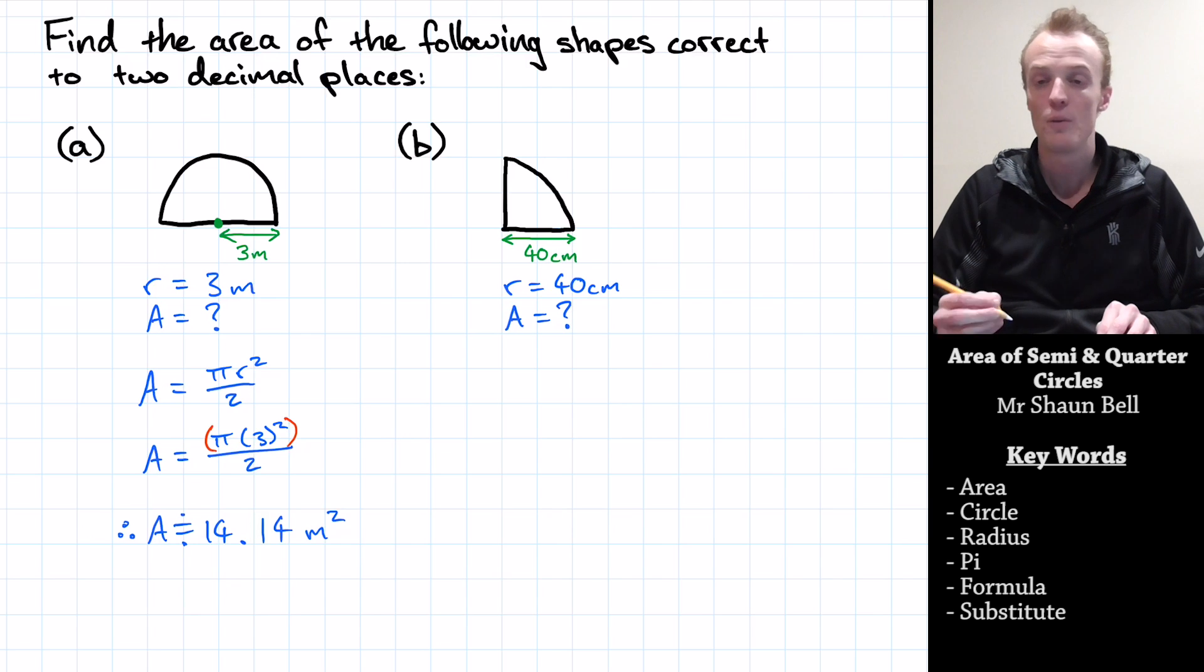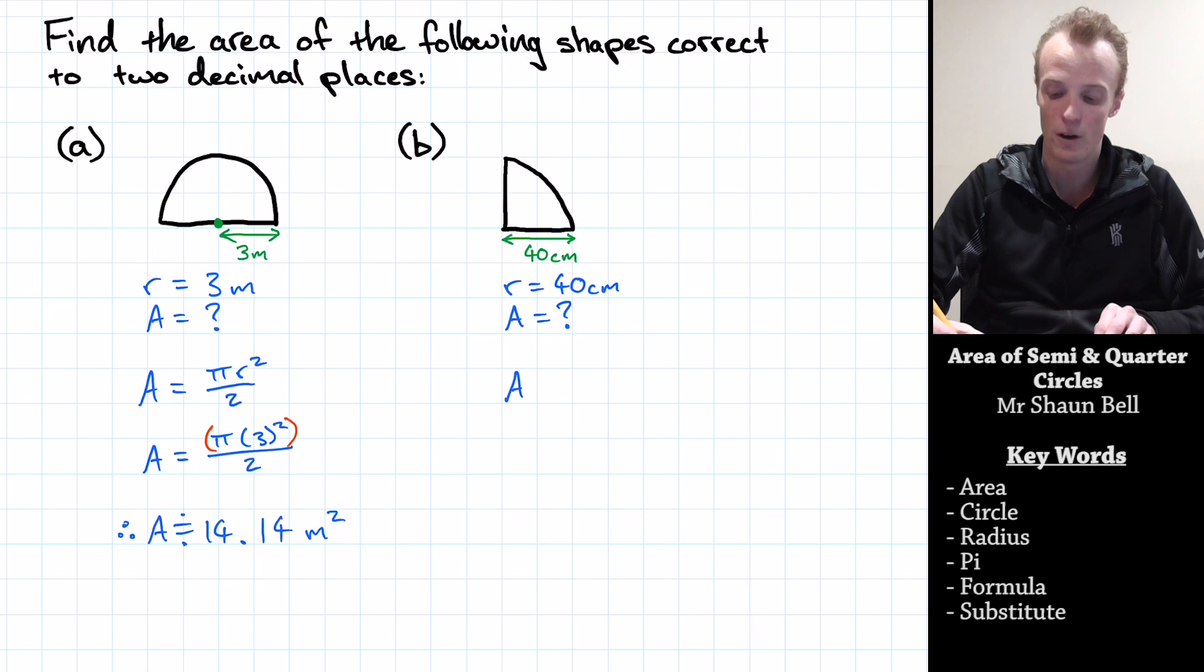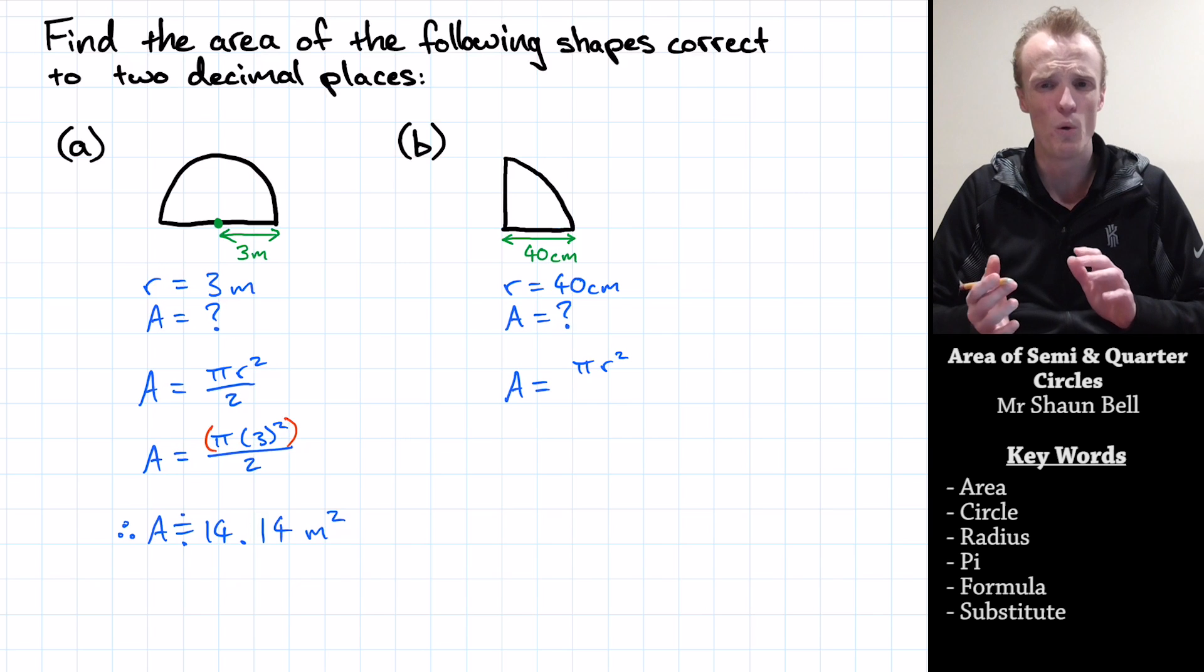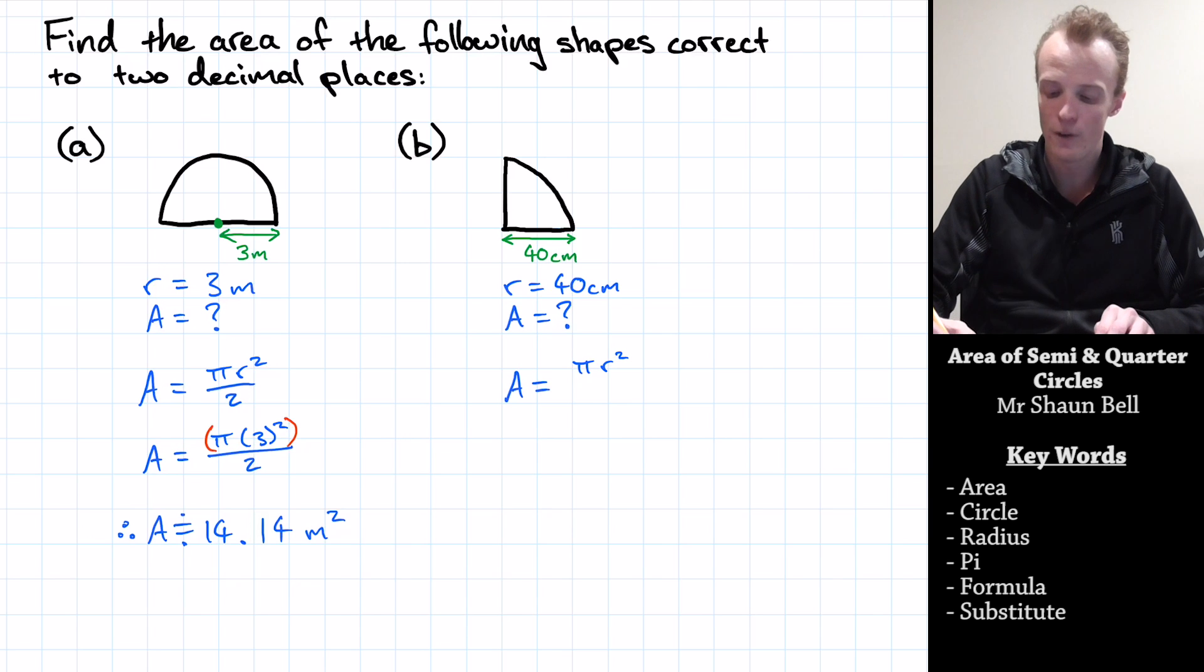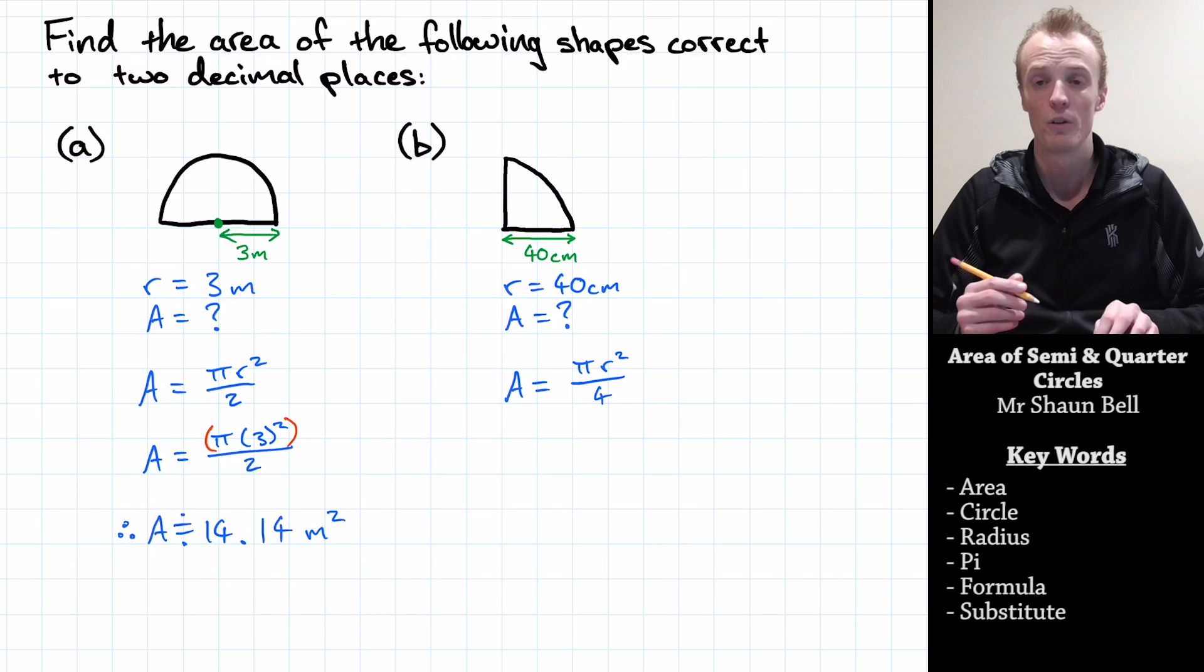Once again, I'm looking to find the area of this quarter of a circle. So I don't know what the area is right now, but what I do know is the formula for a whole circle. And the formula for a whole circle is area equals pi times the radius squared. But I only want a quarter of a circle, so I divide that by four to find the area of a quarter of my circle.